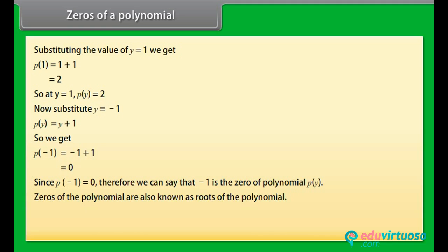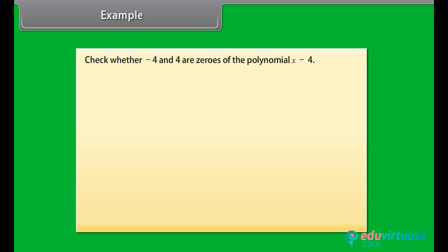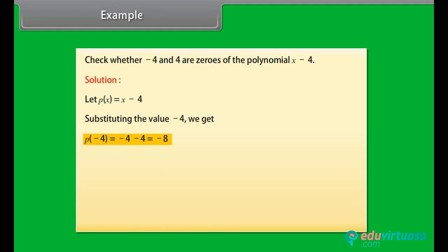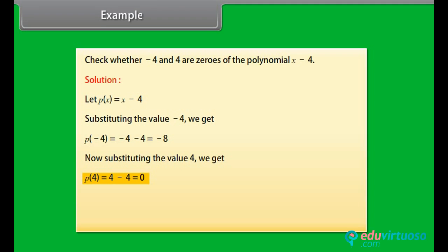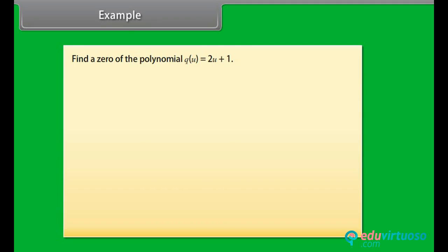Zeros of a polynomial are also known as roots. A non-zero constant polynomial has no zero; a linear polynomial has exactly one zero. Example: Check whether minus 4 and 4 are zeros of the polynomial x minus 4. Let p(x) = x minus 4. Substituting minus 4: p(minus 4) = minus 8. Substituting 4: p(4) = 0. Therefore, 4 is a zero of x minus 4, but minus 4 is not.